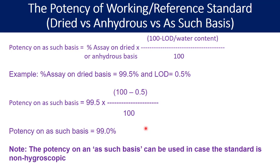Very important to note: the potency on an as-such basis can be used in case the standard is non-hygroscopic, because you need not dry it or evaluate the moisture content by KF titration. You simply use the working standard or reference standard without determining its LOD or water content. In that case, you can use the potency on an as-such basis.